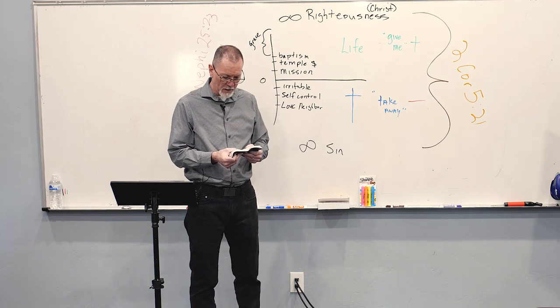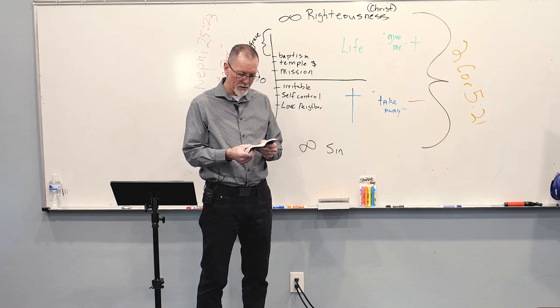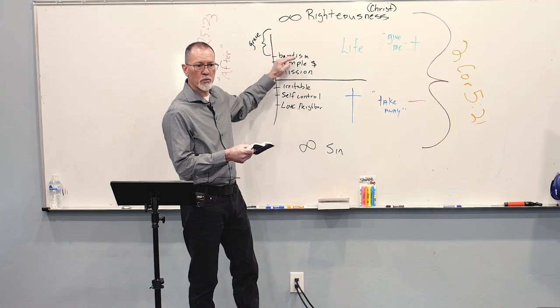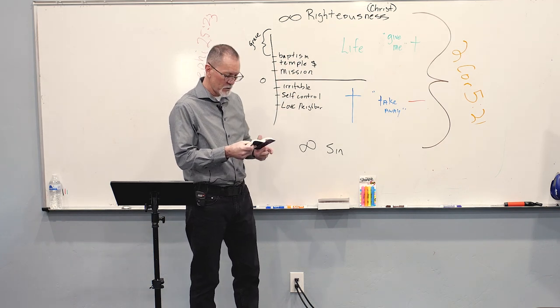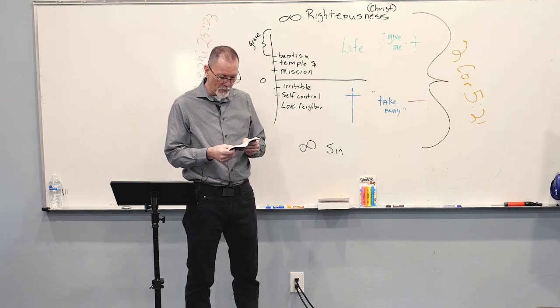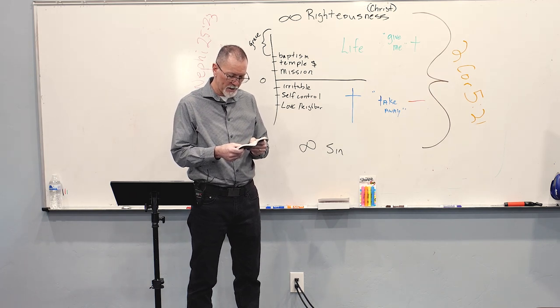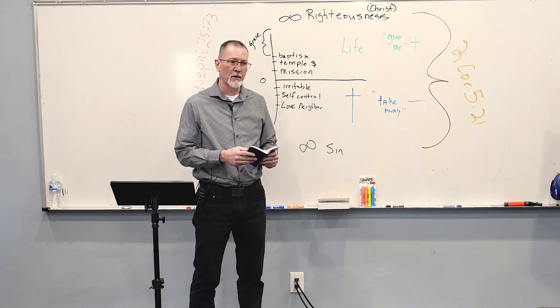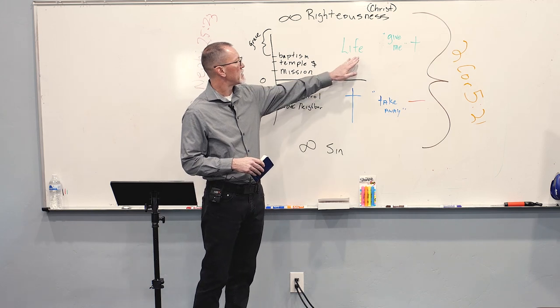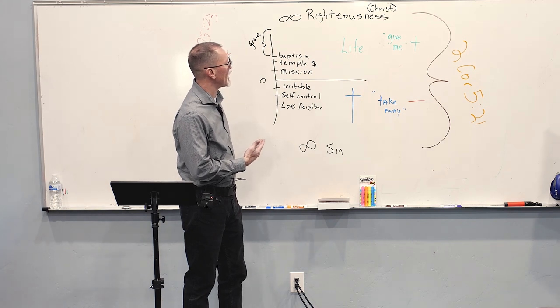Then he contrasts all of that with the word but. Whatever things were gained to me, those things I have counted as loss for the sake of Christ. I count all things to be lost in the view of the surpassing value of knowing Christ Jesus, my Lord, for whom I have suffered the loss of all things, and count them as rubbish, so that I may gain Christ. He's contrasting all of his little works, and he's considering them loss. When he was circumcised, it didn't help him at all. The Greek word there is poop. He's considering all of the good works just poop.